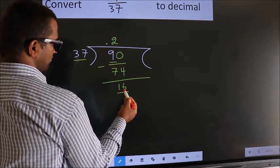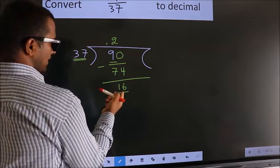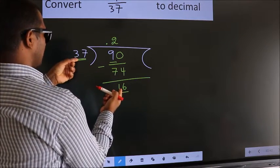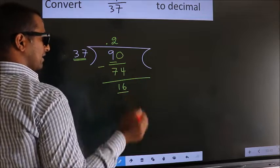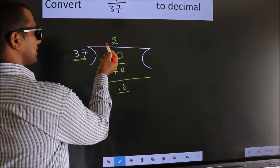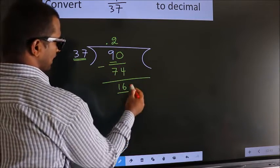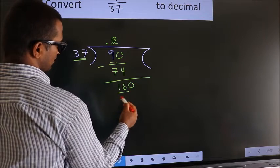Here we have 16, here 37. 16 smaller than 37. And we already have the decimal. So we can directly take 0. So, 160.